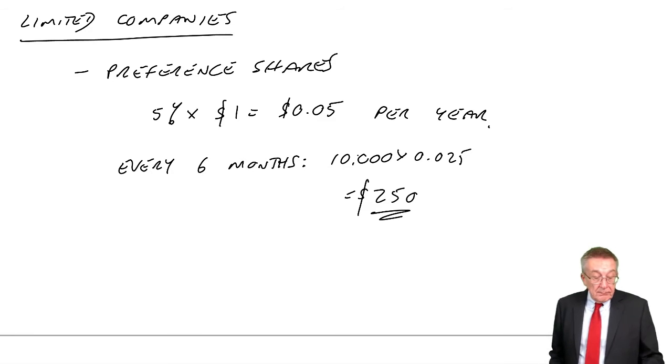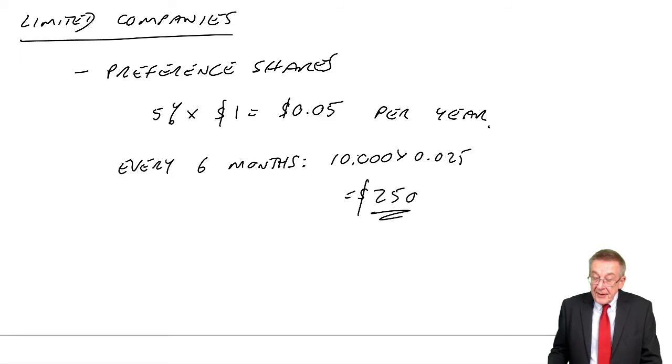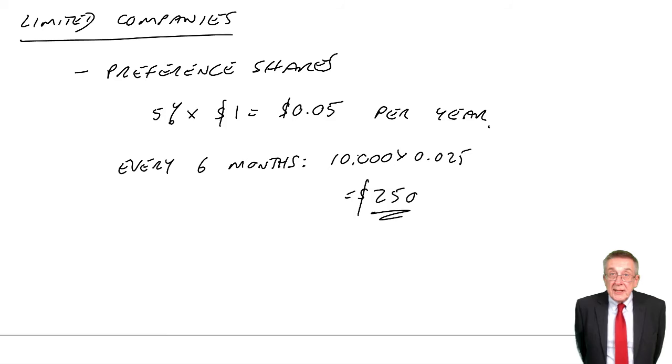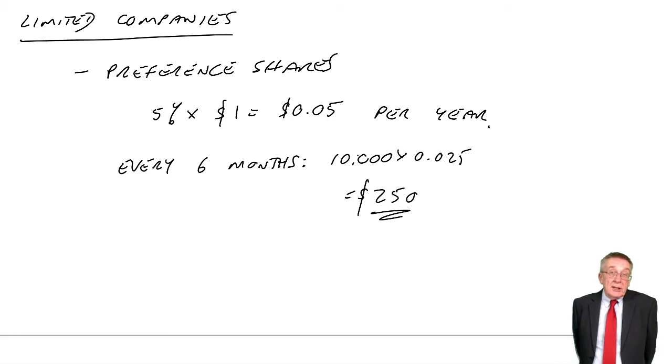Over the page, just two more statements that can be mentioned. The first, the statement of comprehensive income. All it is, it's the same as the statement of profit or loss. Exactly the same as the statement of profit or loss.